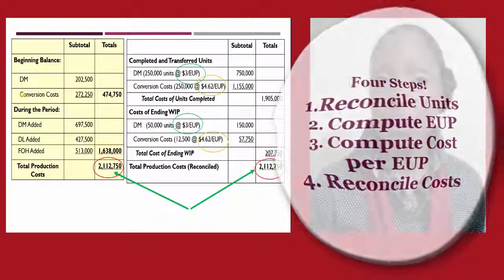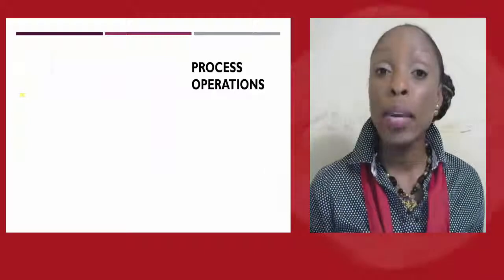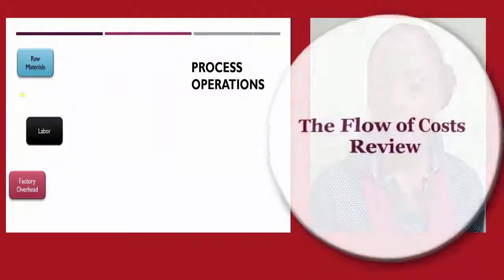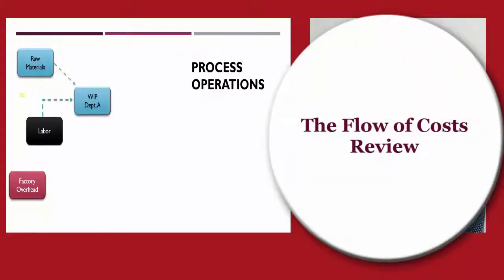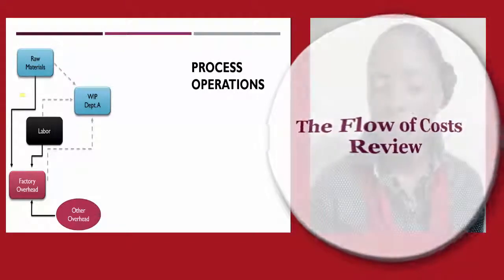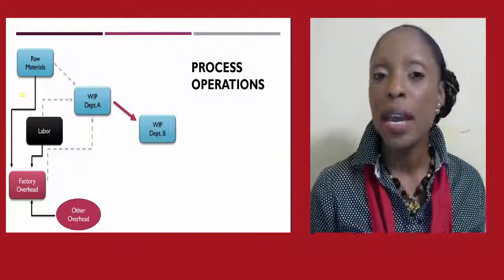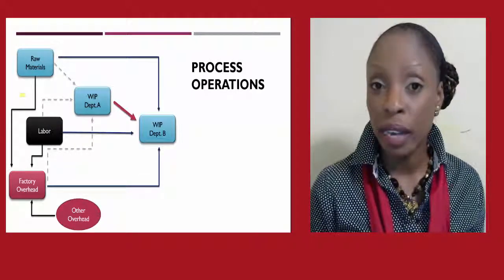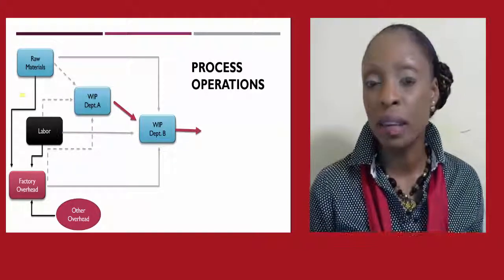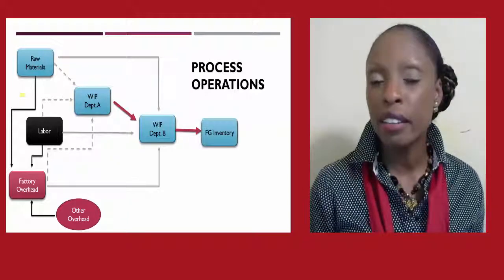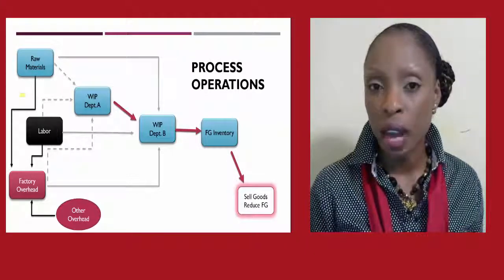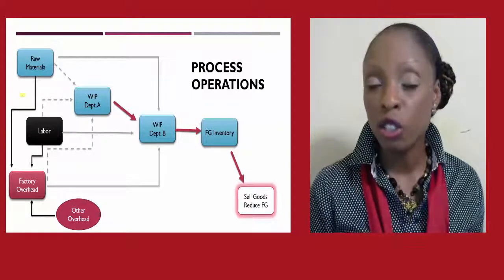Let us review the process operation system as a whole. We begin with three product costs: raw materials, labor, and factory overhead. Raw materials and direct labor are transferred into work-in-process, while indirect materials and indirect labor are transferred into factory overhead. We apply some factory overhead into work-in-process, though additional overhead costs may also be incurred. Work-in-process in Department A is transferred to Department B, where additional labor, materials, and overhead may be added. Once complete, items move into finished goods inventory and are hopefully sold to customers, reducing finished goods inventory and recording cost of goods sold on the income statement.